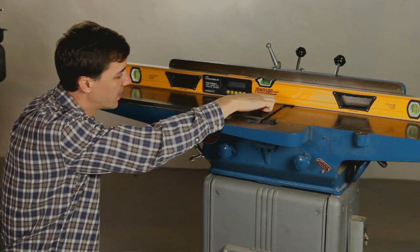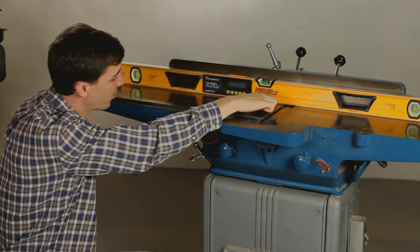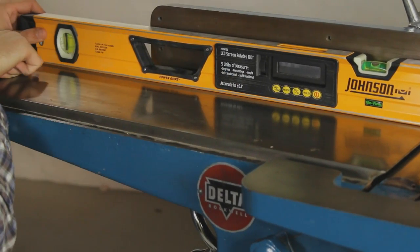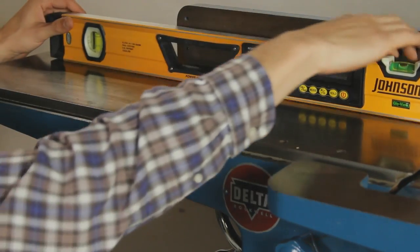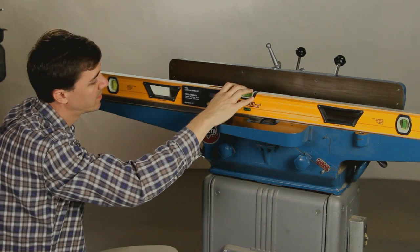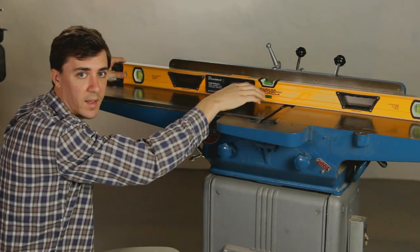On this jointer, I see that the gap is biggest near the cutter head and gets smaller towards the end of the table. It's that way on both sides, but the back side has the biggest gap. So I'm going to use brass shim stock in these dovetail ways to get the table coplanar again.